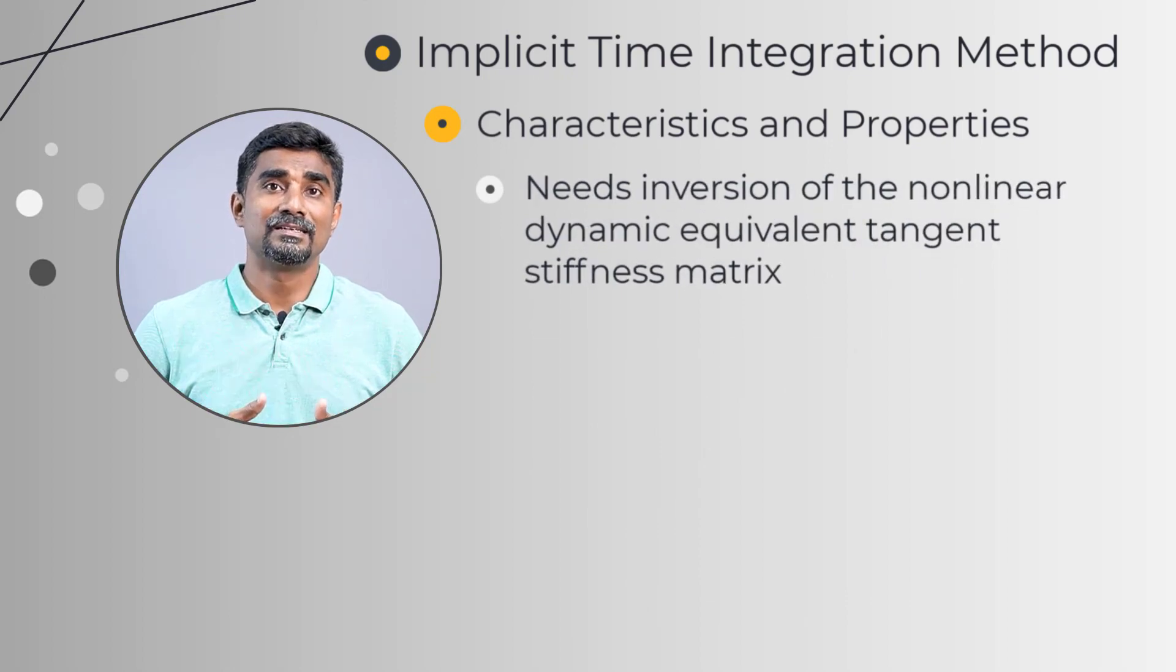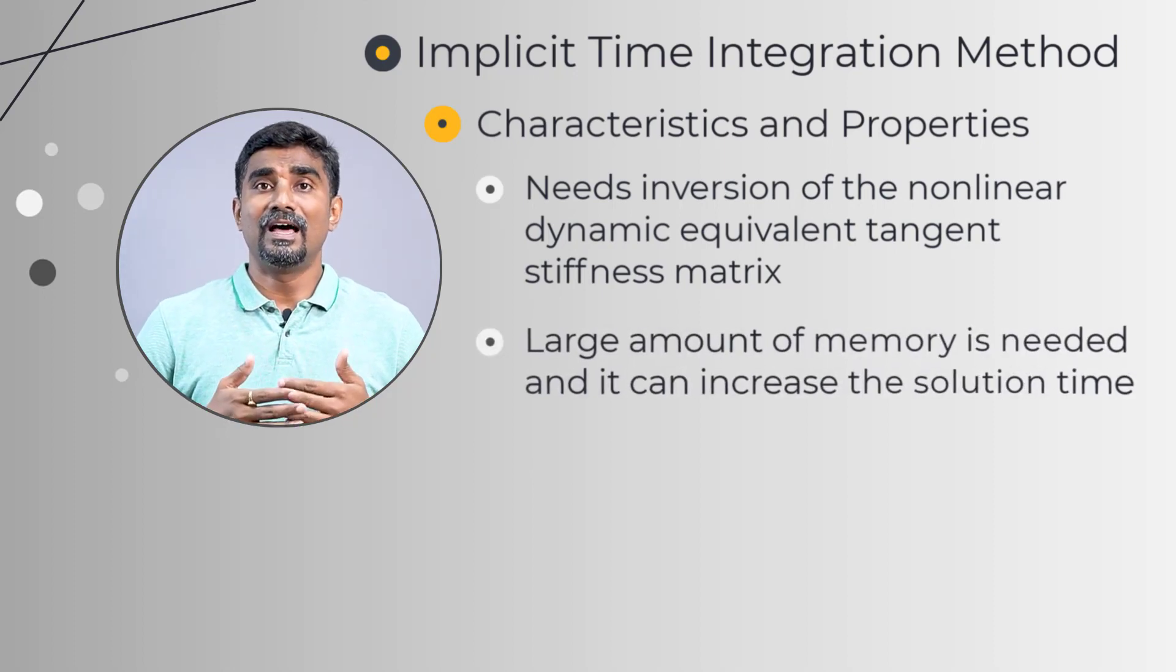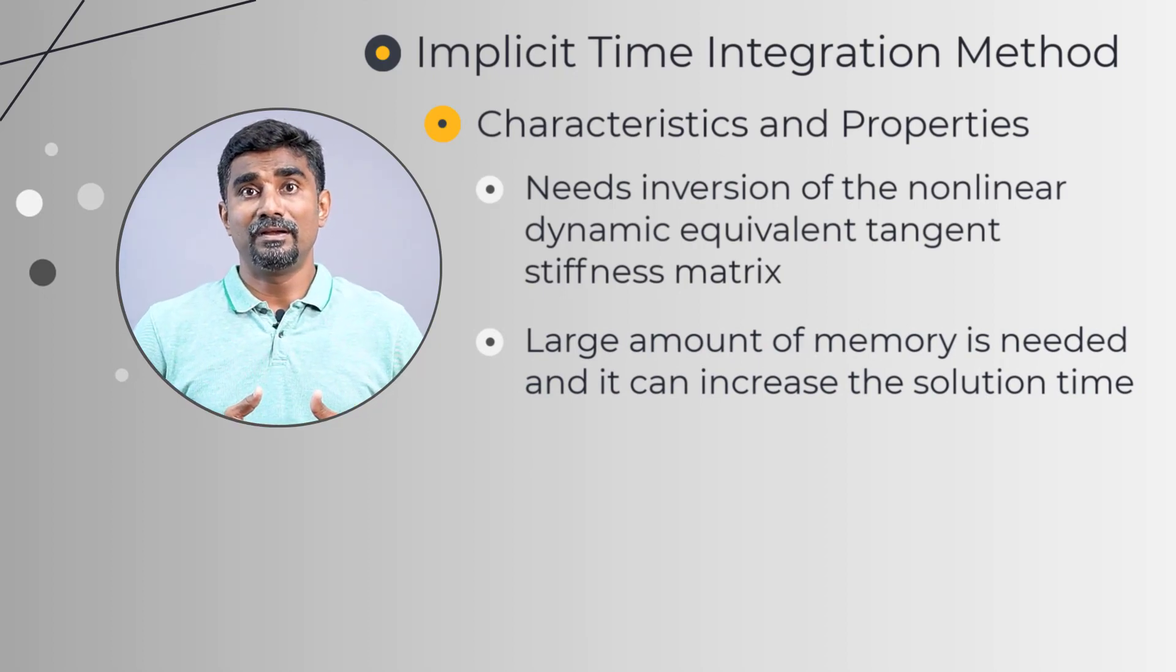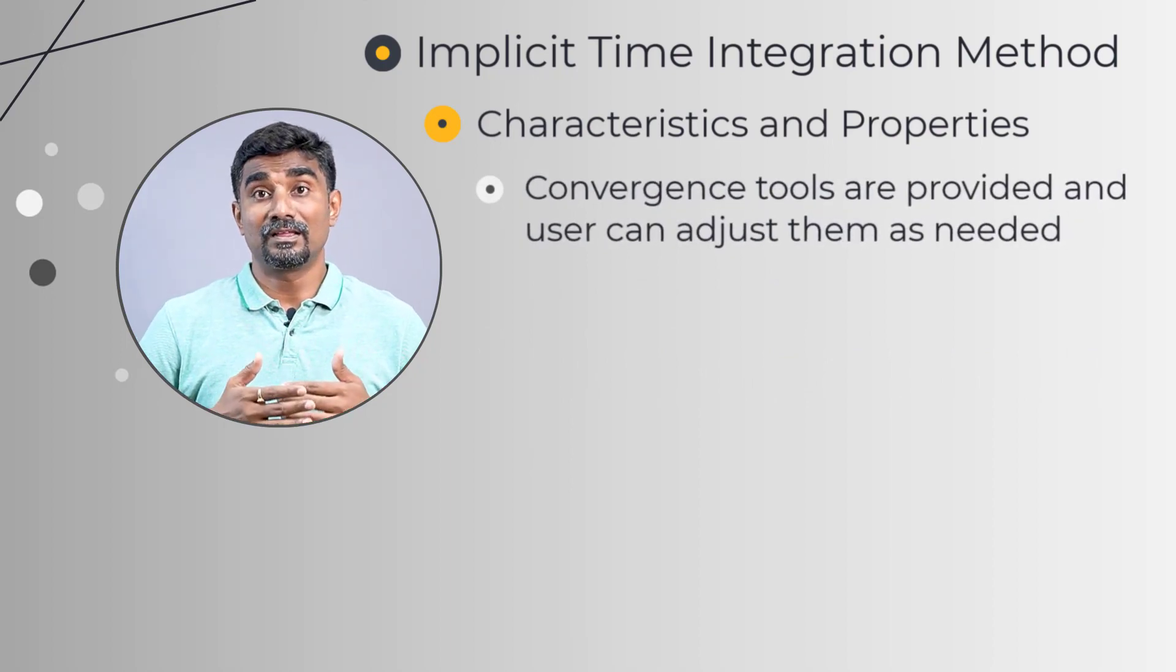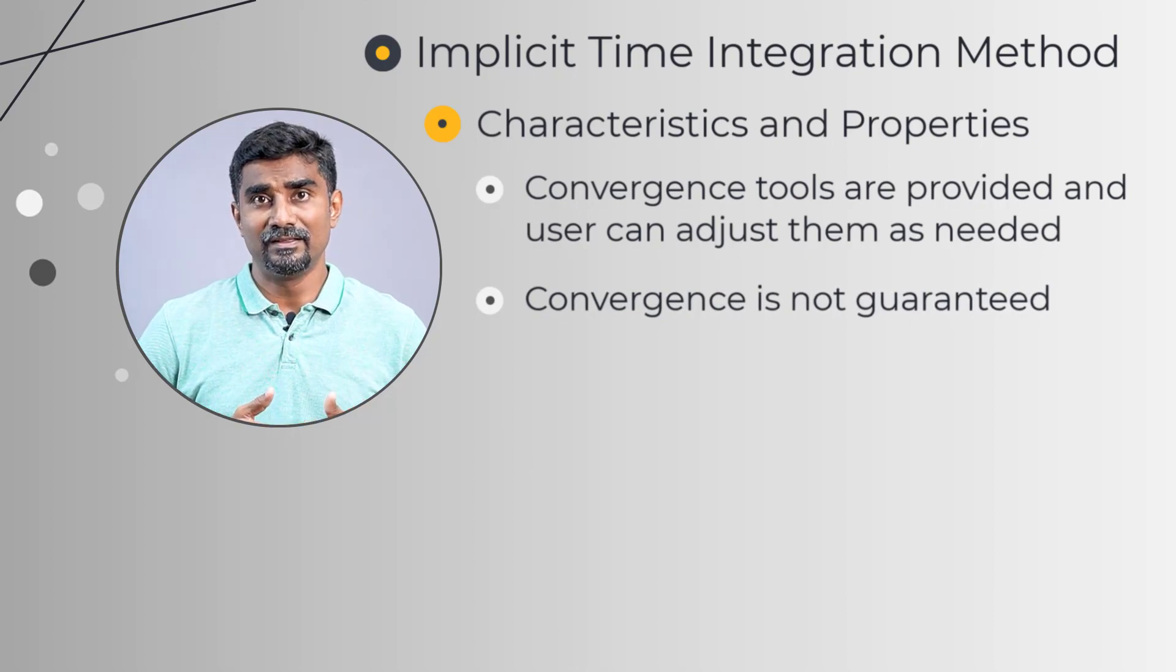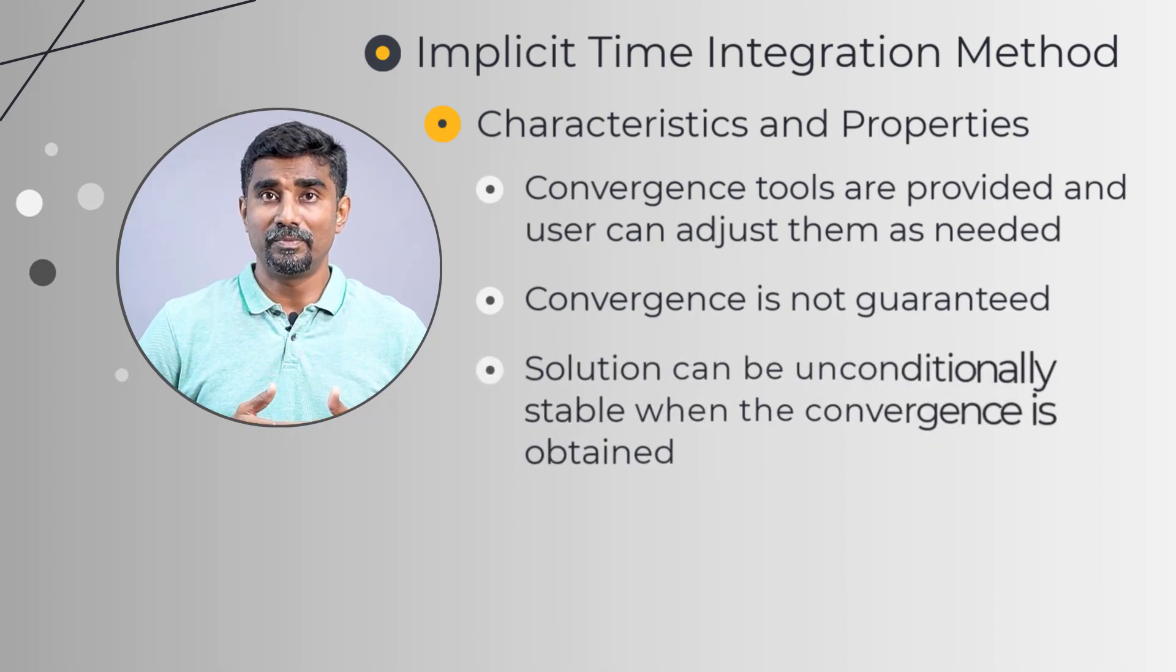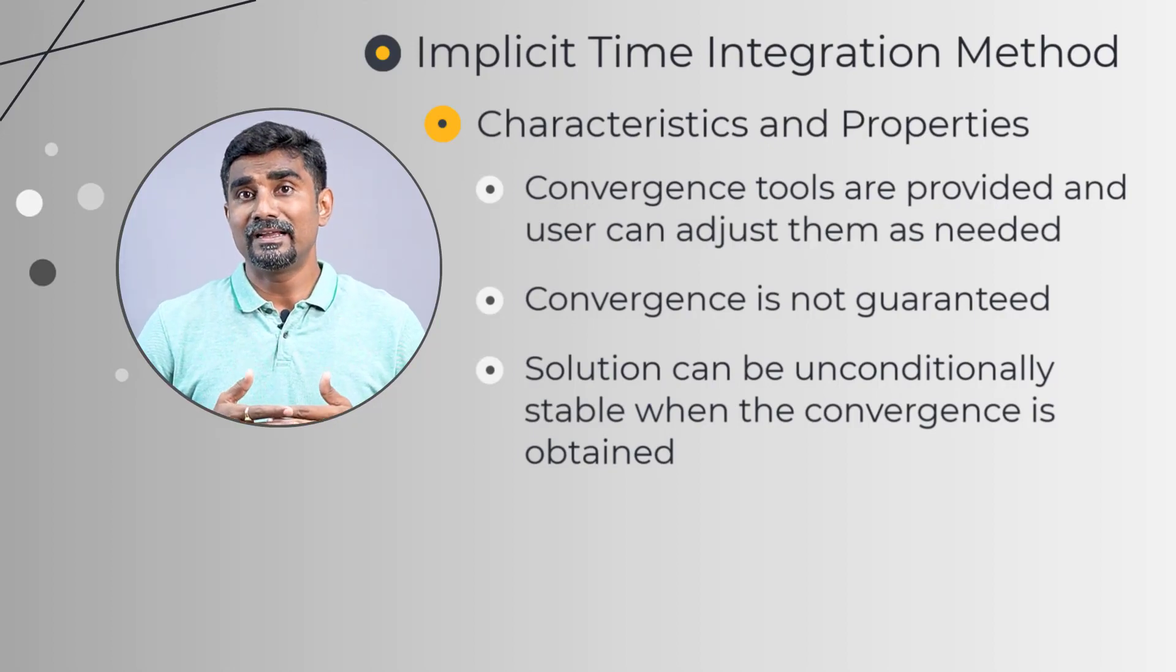The implicit method requires an inversion of the non-linear dynamic equivalent tangent stiffness matrix. This can require large amount of memory and may contribute significantly to the time required to complete the solution. For the implicit time integration method, the convergence tools are provided and the user may need to access them as required. Thus, the convergence in this method is not guaranteed. But when convergence is obtained, depending on the choices of the input parameters, the solution can be unconditionally stable.